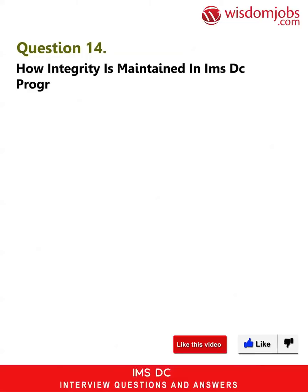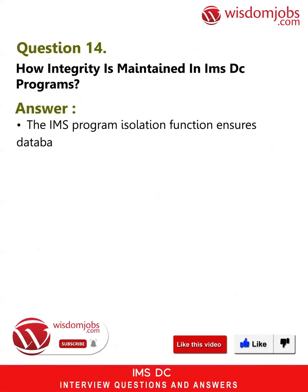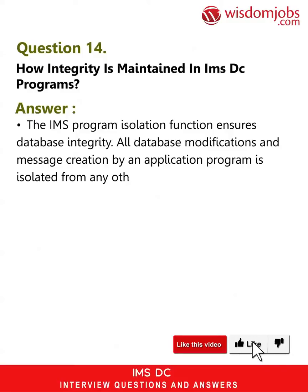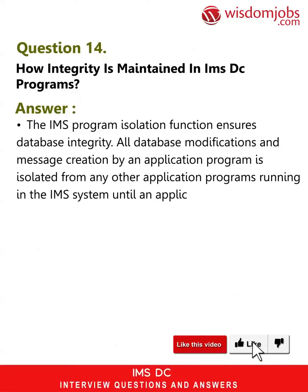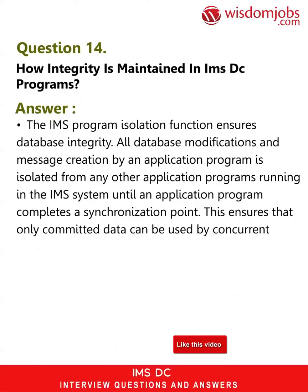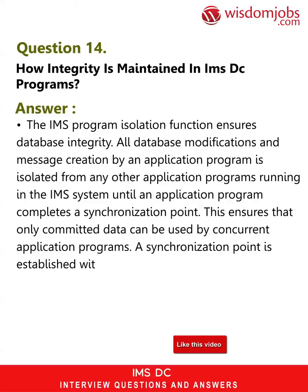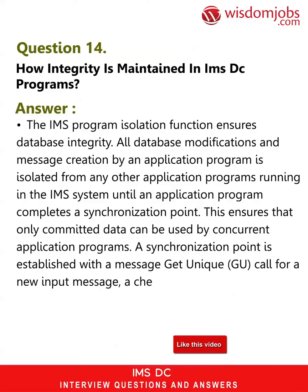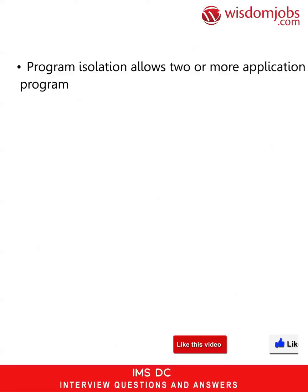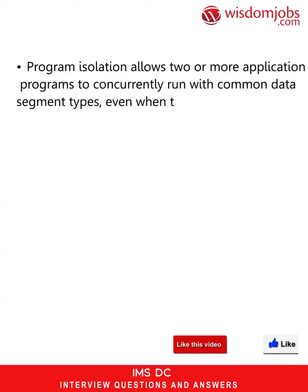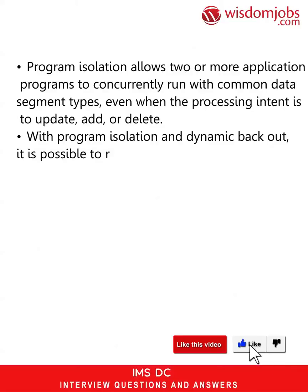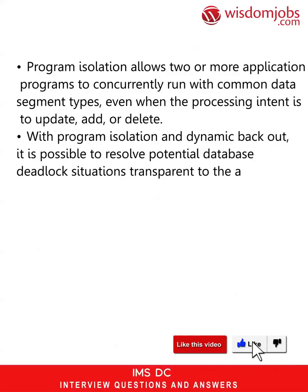Question 14: How is integrity maintained in IMS DC programs? Answer: The IMS program isolation function ensures database integrity. All database modifications and message creation by an application program are isolated from any other application programs running in the IMS system until an application program completes a synchronization point. This ensures that only committed data can be used by concurrent application programs. A synchronization point is established with a GU call for a new input message, a checkpoint call, or application program normal termination. Program isolation allows two or more application programs to concurrently run with common data segment types even when the processing intent is to update, add, or delete. With program isolation and dynamic back-out, it is possible to resolve potential database deadlock situations transparent to the application programs.